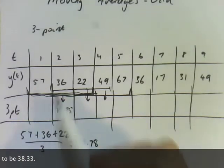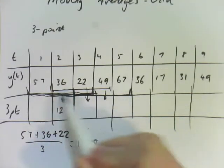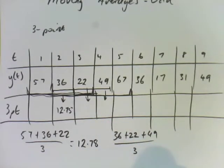So if we do the next one, just for an example, and I'll fill in the rest and show you what it does to the actual time series. So the next one is 36 plus 22 plus 49, and again we're dividing by three. So I'll calculate that, and I'll be back. So that equals 35.67. So that's going to go in there.